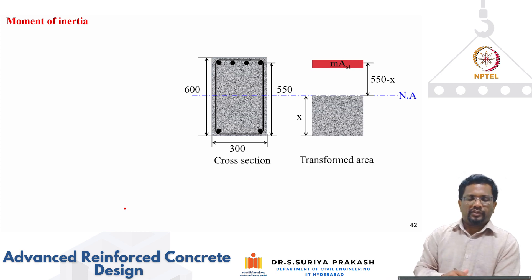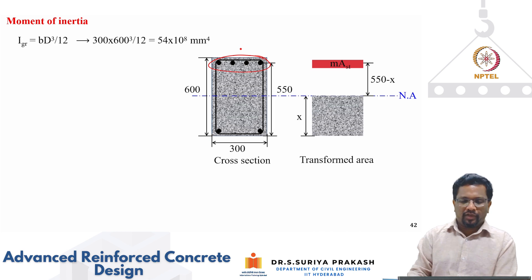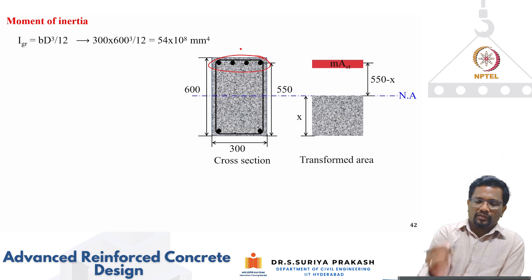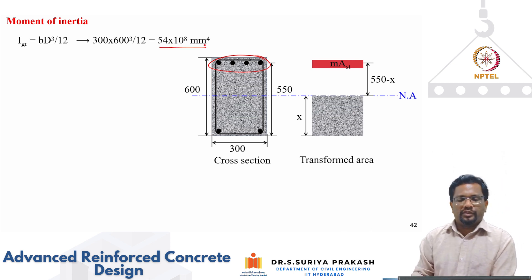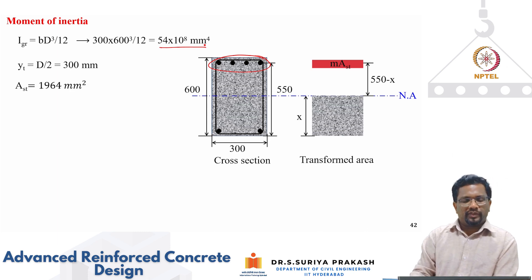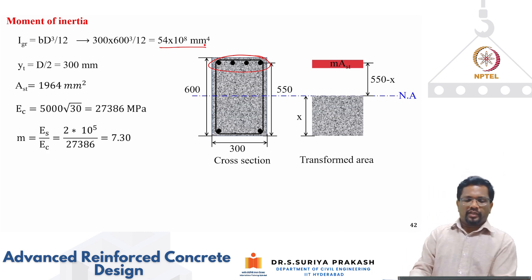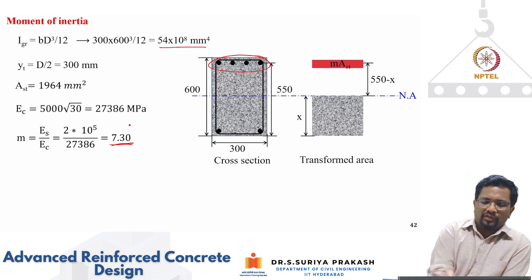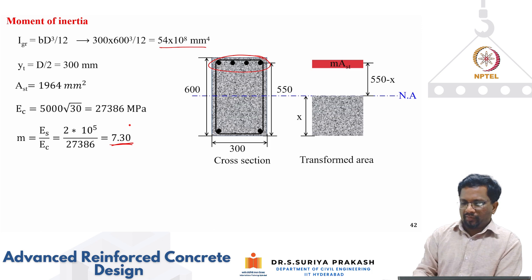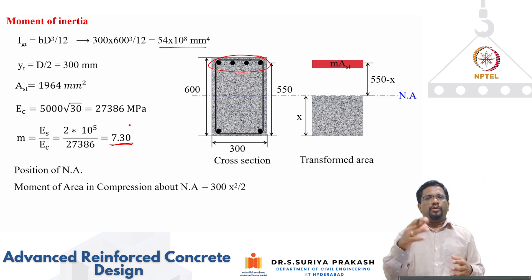For this cross section, we first identify the section properties. The gross moment of inertia I_gross is B×D³/12 = 300×600³/12 = 54×10⁸ mm⁴, and y_t (distance to extreme fiber) is D/2 = 300 mm. AST is 1964 mm². Elastic modulus of concrete E_c = 5000√30 = 27,386 MPa. The modular ratio m = E_s/E_c = 200,000/27,386 = 7.3, which we'll use to locate the neutral axis.